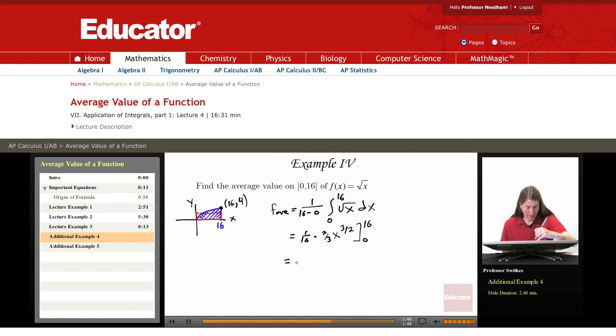We can do a little bit of simplifying of the 1 16th times 2 thirds. And so we have 1 over 24 from the 1 16th times 2 thirds. 16 to the 3 halves minus 0 to the 3 halves.